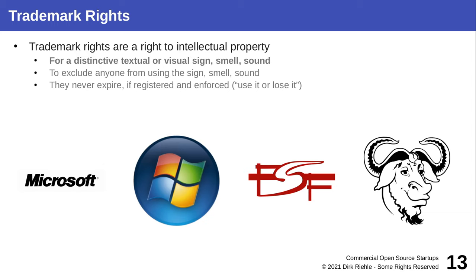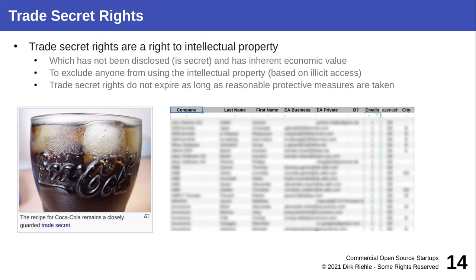Trademark rights protect marks — distinctive signs, sounds, or smells. The Nokia jingle, for example, is a very well-known sound that was trademarked and hence protected — only Nokia can use it. Visual examples of trademarks include Microsoft — the term, how it's written, the logo — and the Free Software Foundation and the GNU mark.